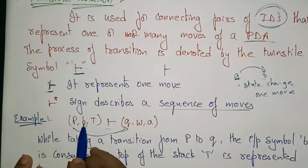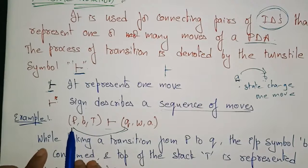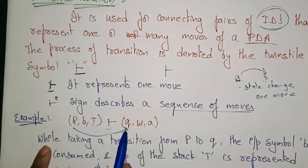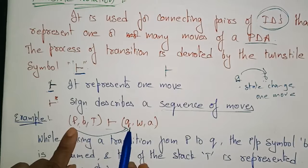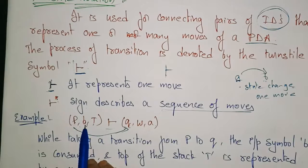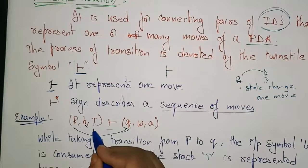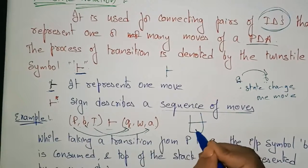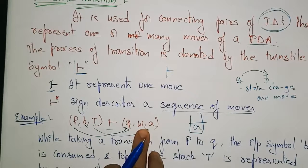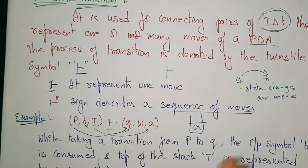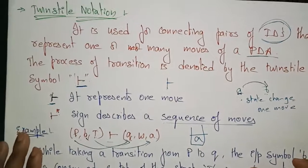While taking a transition from state p to state q — on the left-hand side we have a state, unconsumed input, and stack content. There is one move: the input symbol b is consumed, and the top of the stack t is replaced with a new string a. So now the top of the stack consists of a. The unconsumed input b is consumed and the top of the stack changes to a. This is the way you represent the turnstile notation.